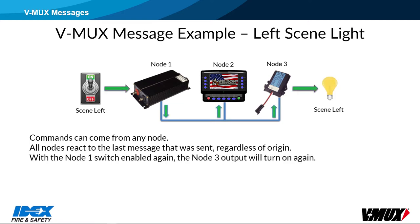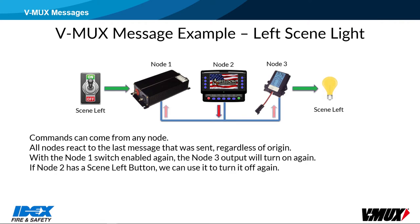If we enable the node 1 switch again, the light will turn on. If node 2 has a scene left button, you can use it to turn the command off. Once node 2 sends the off command, all nodes will register the command as off, including node 1, which at this point still has an active switch connected to the scene left input. If the switch is turned off, the scene left command will be sent again in an off state. Since all nodes already register that the command is off, no outputs will change.